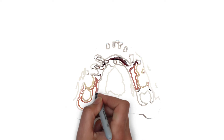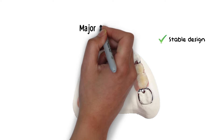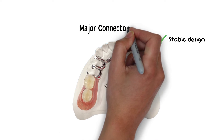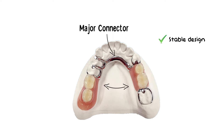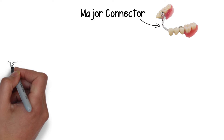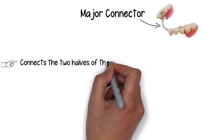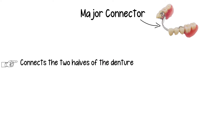The first part is the major connector. In order to have an optimum and stable design, a removable partial denture needs to extend to both sides of the arch, because a one-sided removable partial denture will create a lot of instability. The component that connects the right and left halves of the removable partial denture frame is known as the major connector.